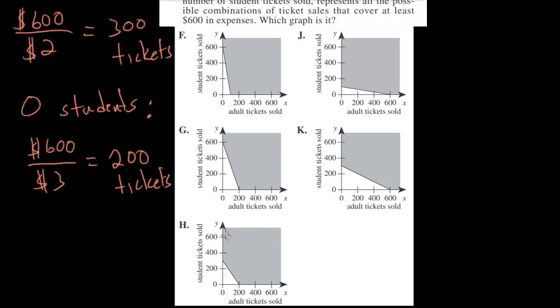Looking at our graphs, we can see that this one down here has a Y intercept of 300, so when zero adults buy tickets, 300 students have to buy tickets.